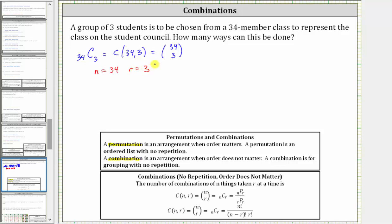Now let's evaluate this by hand, and then we'll check it on the calculator. The numerator is n factorial, which is 34 factorial. And the denominator is the product of n minus r factorial and r factorial, where n minus r factorial is 31 factorial, and r factorial is 3 factorial.